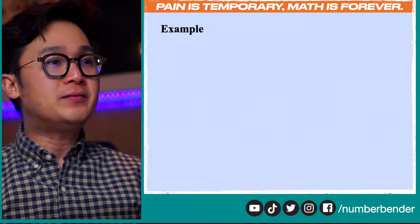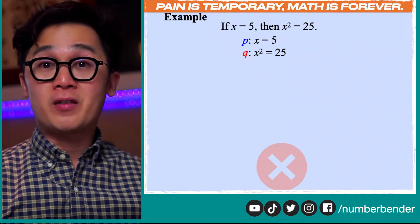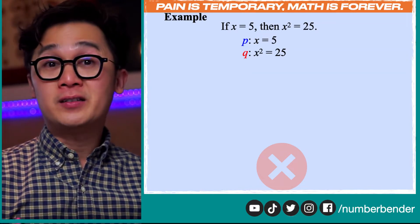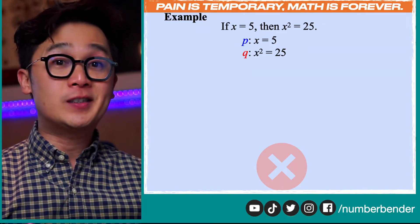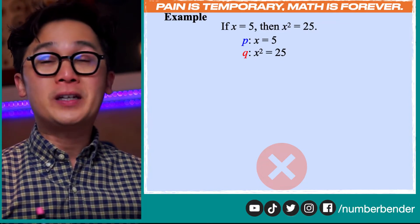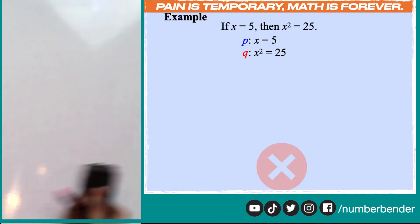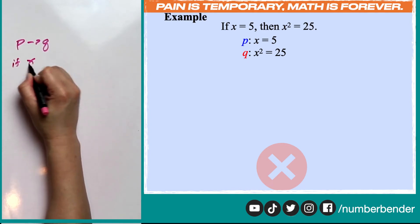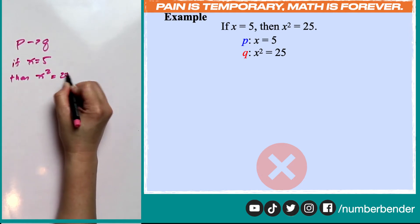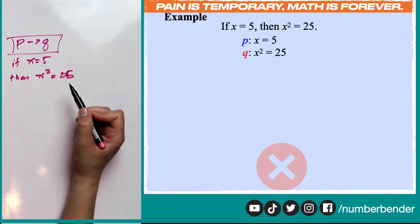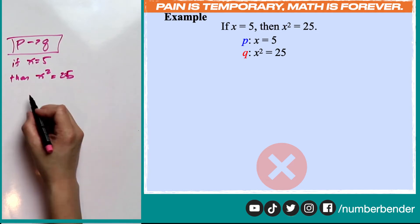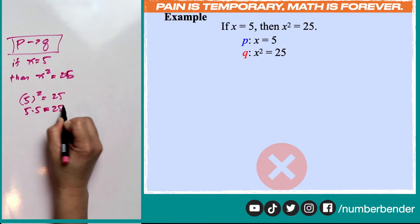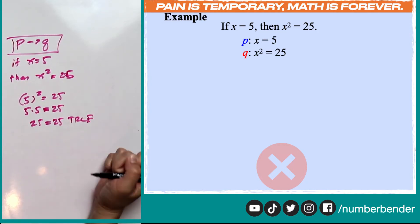Let's have another example. P, our hypothesis, is x = 5, and Q is x² = 25. To write this as a valid biconditional statement, we need to test its conditional and converse. The conditional statement P then Q is: if x = 5, then x² = 25. Is this true? Yes, because if x = 5, then 5² = 5 × 5 = 25, which makes our conditional statement true.